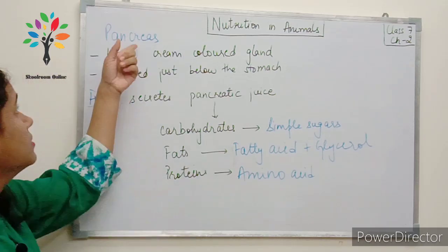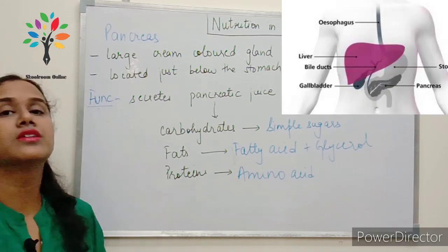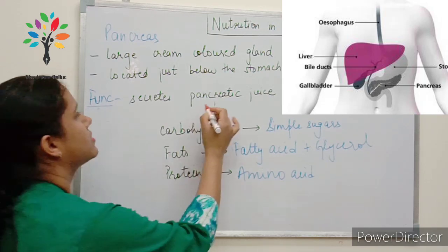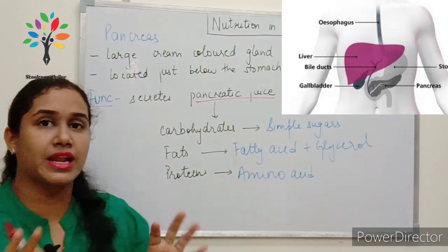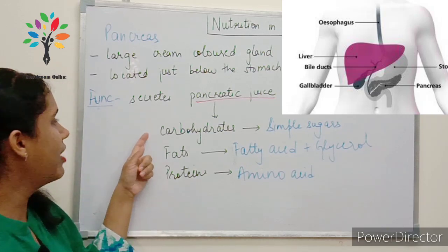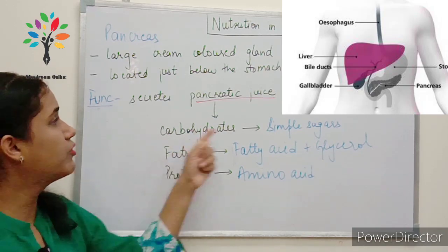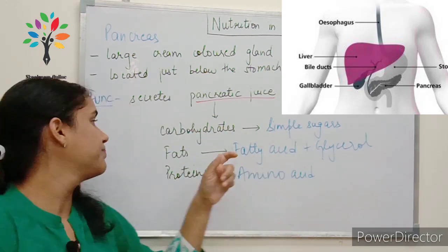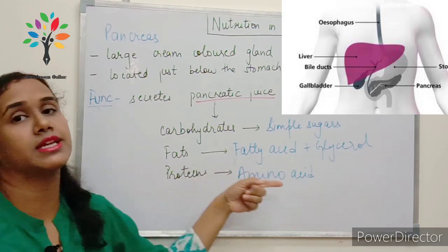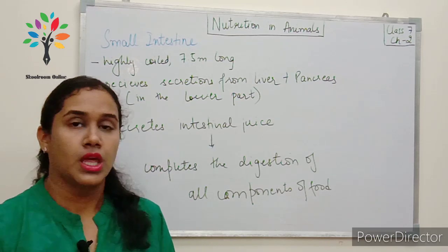The second gland associated with the alimentary canal is the pancreas. It is a large, cream-colored gland located just below the stomach. Its function is to secrete pancreatic juice. The pancreatic juice acts on carbohydrates, fats, and proteins. It breaks down carbohydrates into simple sugars like glucose, fats into fatty acids and glycerol, and proteins into amino acids.